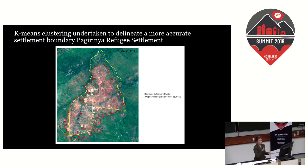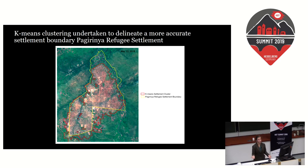For Pajrina refugee settlement, the K-means settlement clustering method — a simple approach of taking an image and breaking it into two different clusters — captures the spillover effect of settlement outside of the OSM boundary a little bit more effectively.